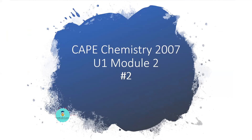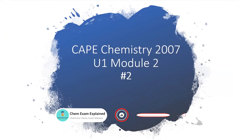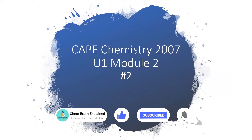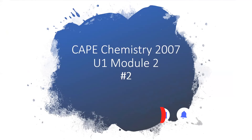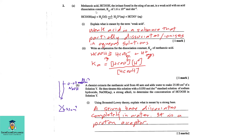Welcome back to Chem Exam Explained, where the aim is chemistry clarity and exam mastery. In today's video we'll be looking at CAPE Chemistry 2007 Unit 1 Module 2, Number 2: Kinetics and Equilibria.